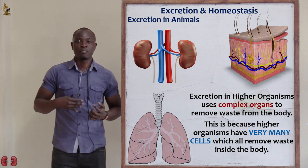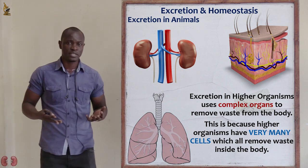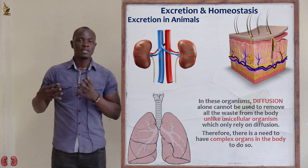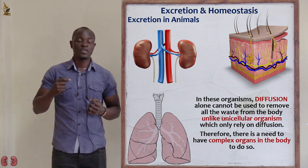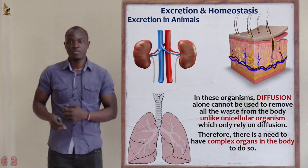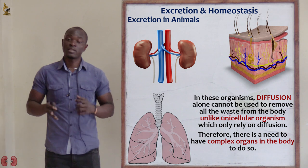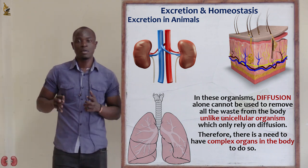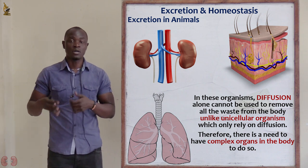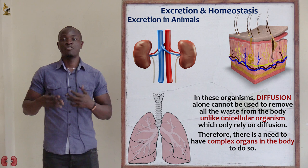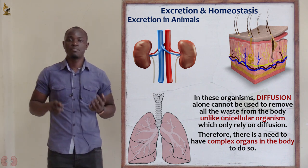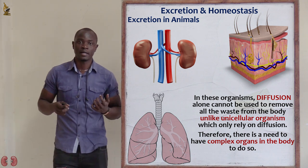This is because most animals are made up of different organs and tissues which produce a lot of waste. Since these organs and tissues produce so much waste, there is a need for a very complex excretory system to remove these waste products. Therefore, in higher organisms, diffusion alone cannot remove all the waste products, because diffusion only deals with removal of very low quantities of waste, and higher organisms produce a lot of waste within a short period of time.